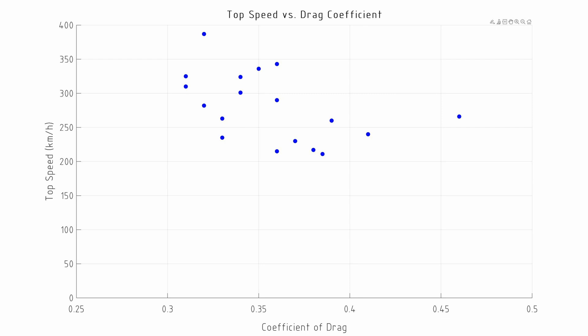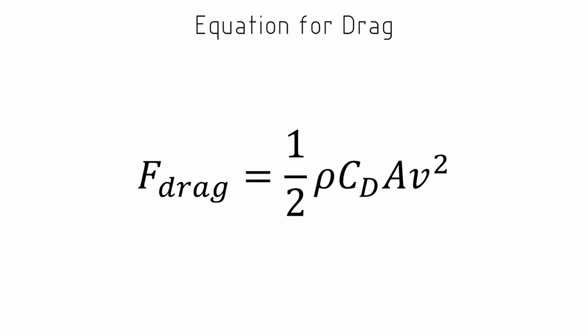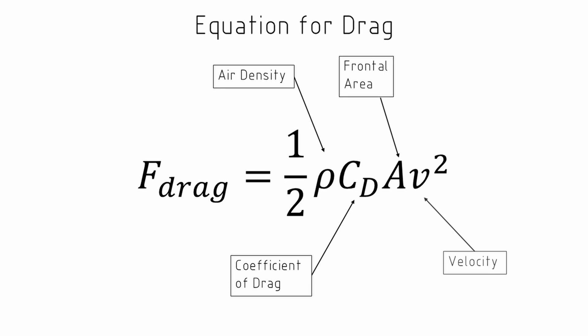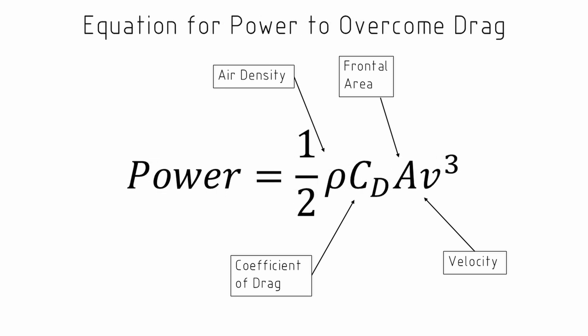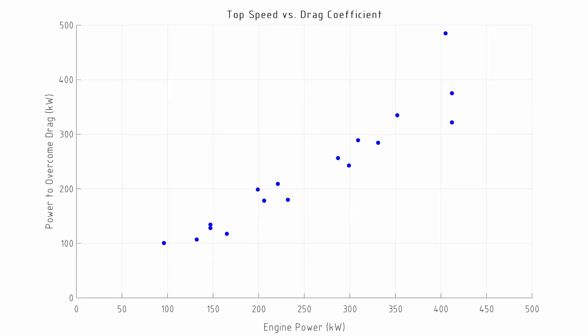Some of these vehicles did have a drag coefficient recorded, and if we look at the top speed versus drag we do see a correlation. What would be interesting is to see if this relationship holds true to physics. The equation for drag force is: half rho (air density) times the coefficient of drag times frontal area times velocity squared. Since power equals force times velocity, if we take the calculated power — half rho times Cd times A times v cubed — and plot it versus power, we see a very clear linear relationship, with some error likely due to misreporting of drag coefficient or power numbers.